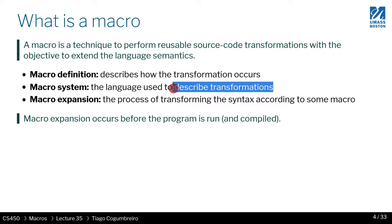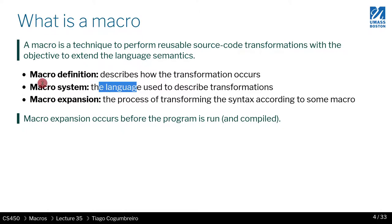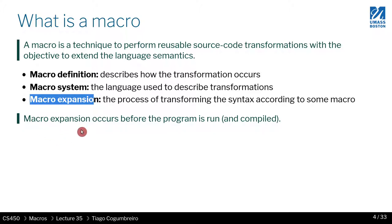The macro language could be the same as the source programming language, a slightly different one, or just an API to access the AST nodes. Then there's the process known as macro expansion, which is the procedural part — where you take the macro language and use it to describe how you perform the transformation. Macro expansion is the act of performing those transformations, and it occurs before the program is run and compiled.